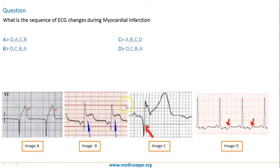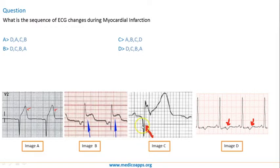Four images are given — image A, image B, image C, and image D. The first image shows a hyperacute T wave, where the T wave is elevated. The second image shows a proper ST segment elevation. The third image shows a deep Q wave, and the fourth image shows an inverted T wave.